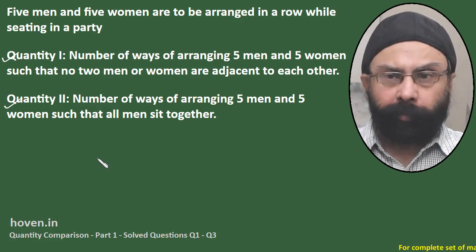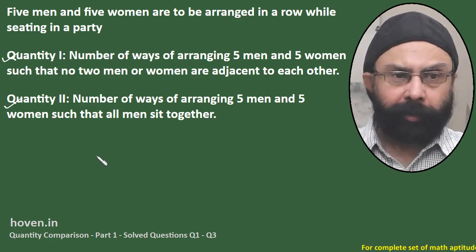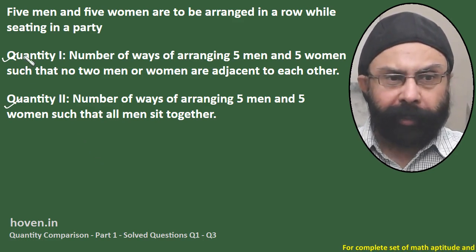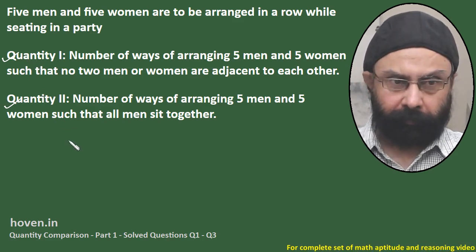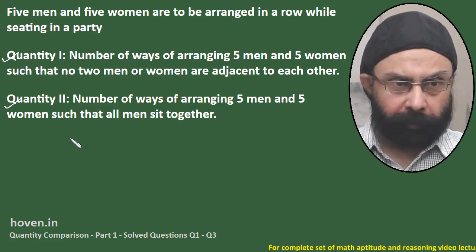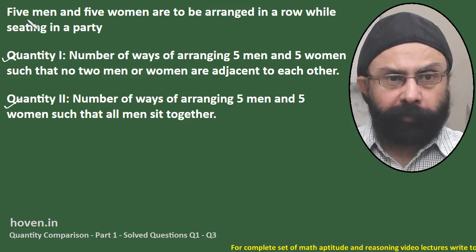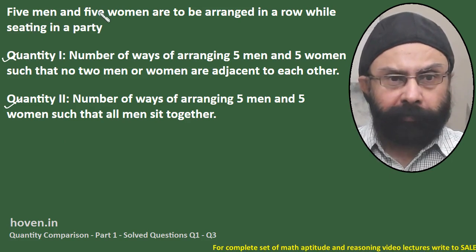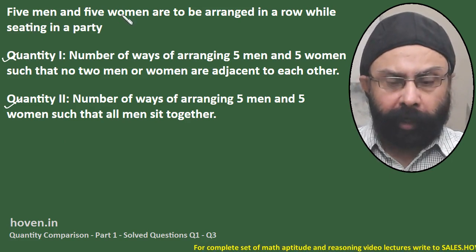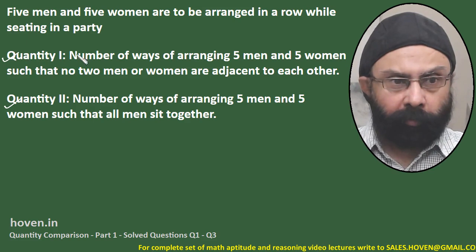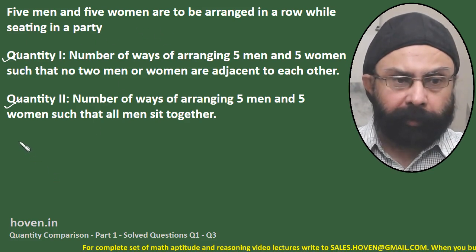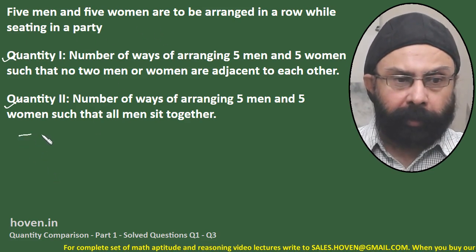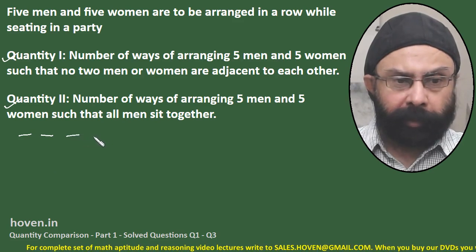The bigger problem is not to find the option but to find the relation between these two quantities. The problem states that 5 men and 5 women are to be arranged in a row while sitting at a party — so there are 10 people in total.